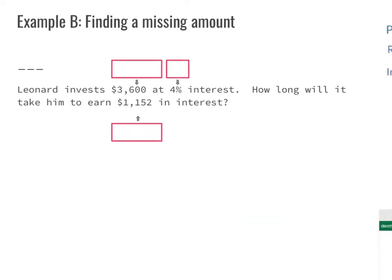Now let's take a look at Example B. It says: find the missing amount. Leonard invests $3,600 at 4% interest. How long will it take him to earn $1,152 in interest? The first thing we do is identify what we have. He invests $3,600 — that's our principal. Four percent — that's our rate. One thousand one hundred fifty-two dollars in interest — that's our I. We're solving for time.